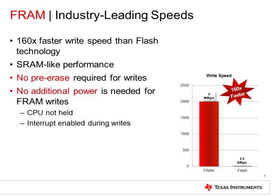Flash writes are capped at around 13 kilobytes per second, including erase time per segment write, whereas average-use-case FRAM write rates can reach 2 MB per second or faster. One example application where such high speeds are game-changing is over-the-air updates or re-imaging the firmware on a target device.